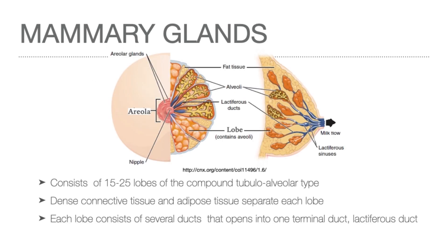The mammary gland consists of 15 to 25 lobes, each of the compound tubulo-alveolar type, separated by dense connective tissue and adipose tissue. The variation in breast size among women is related to the adipose tissue volume rather than the epithelial or ductal component.